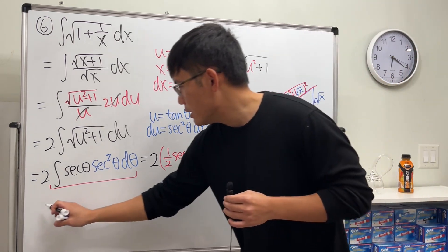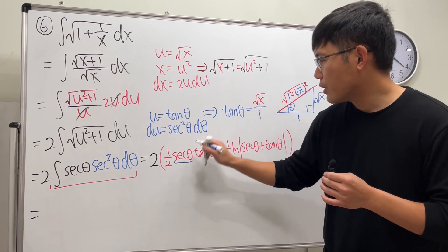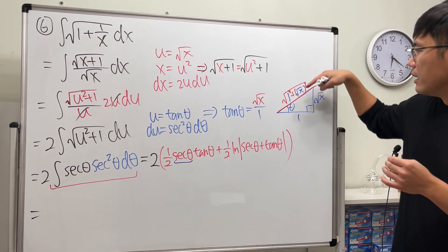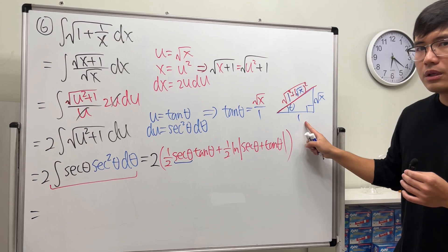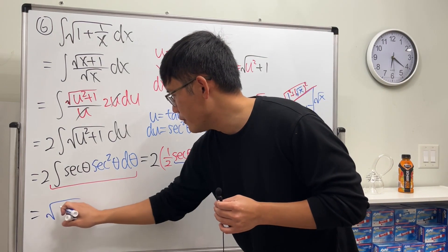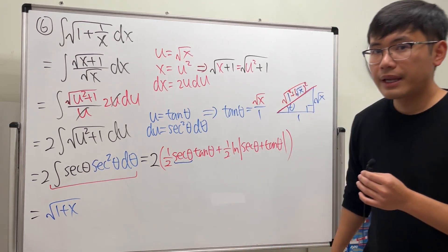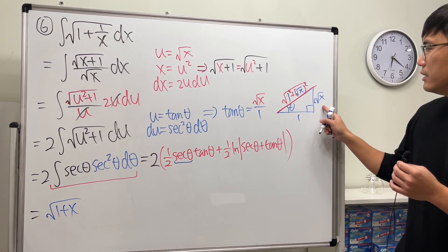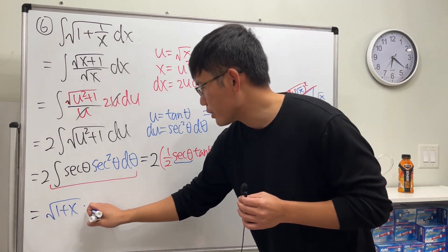Ladies and gentlemen, we will have secant theta, which is hypotenuse over adjacent. So that's just square root of 1 plus x. Next, tangent theta is this over that, so just square root of x.